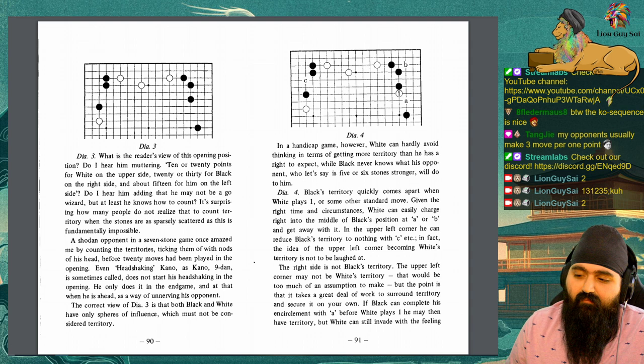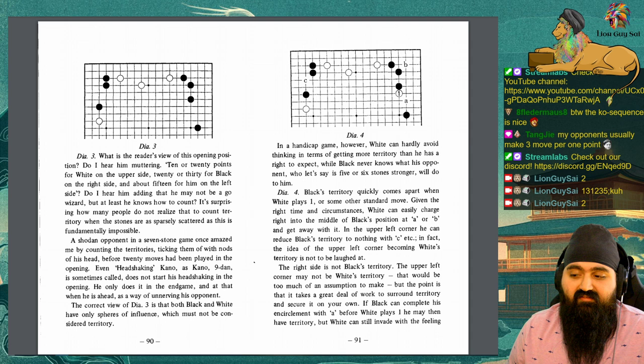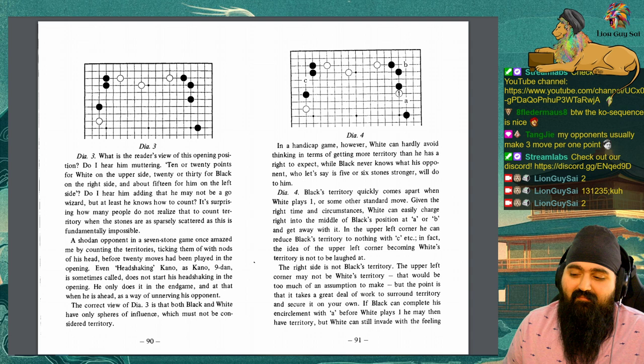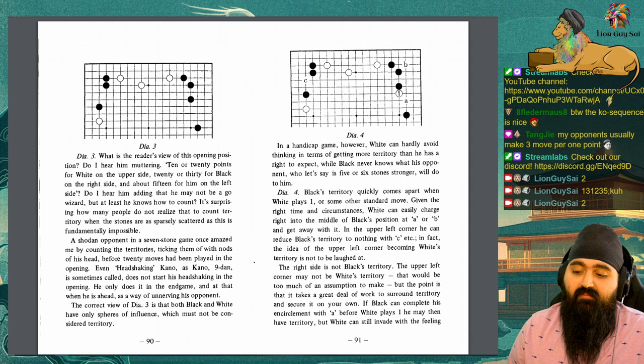A shodan opponent in a 7 stone game once amazed me by counting the territories, ticking them off with nods of his head, before 20 moves have been played in the opening. Even head-shaking Kano, as Kano 9 Dan is sometimes called, does not start his head shaking in the opening. He only does it in the endgame, and at that when he's ahead, as a way of unnerving his opponent. The correct view of diagram 3 is that both black and white have only spheres of influence, which must not be considered territory.